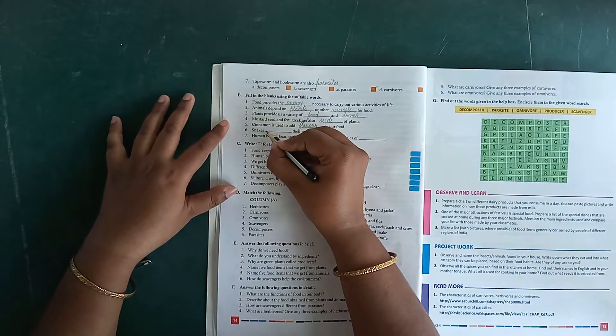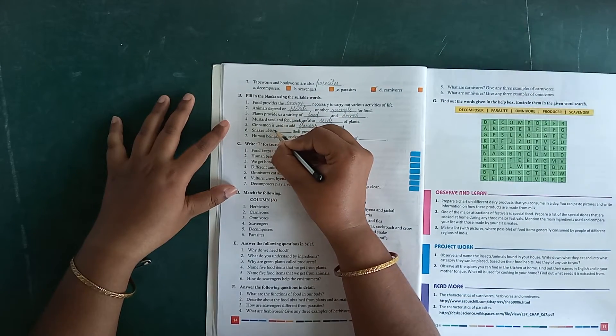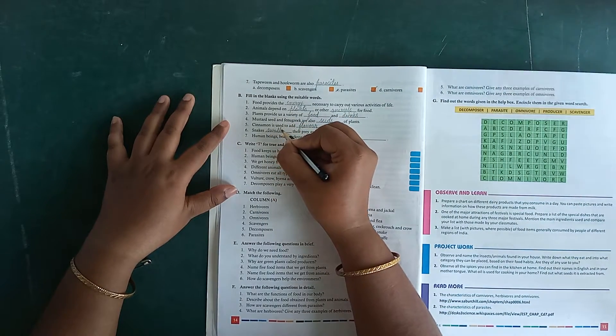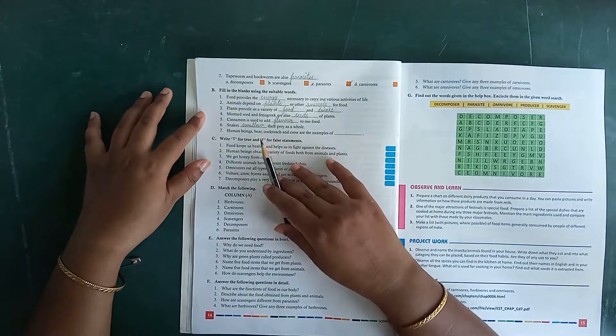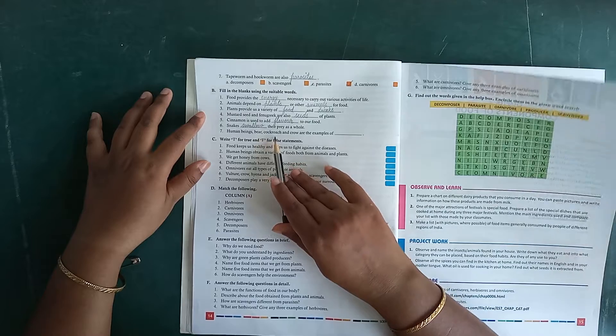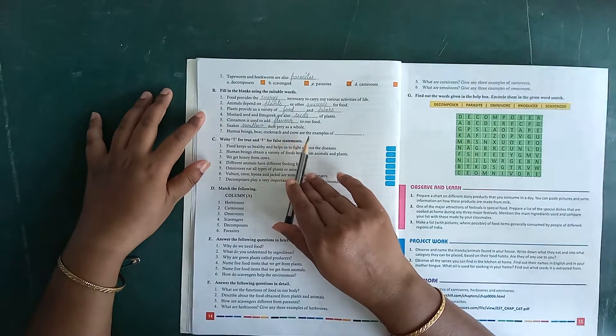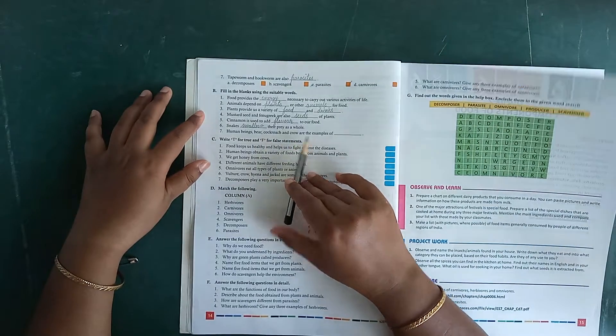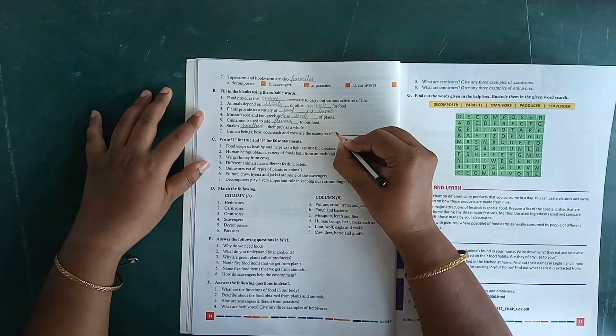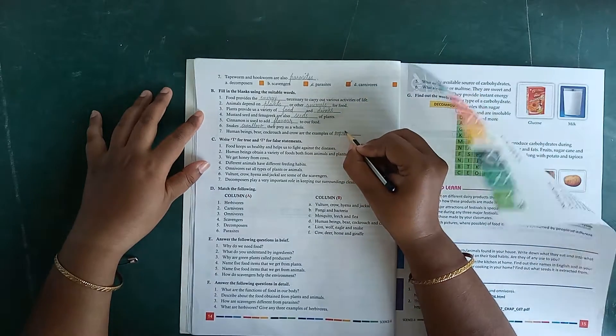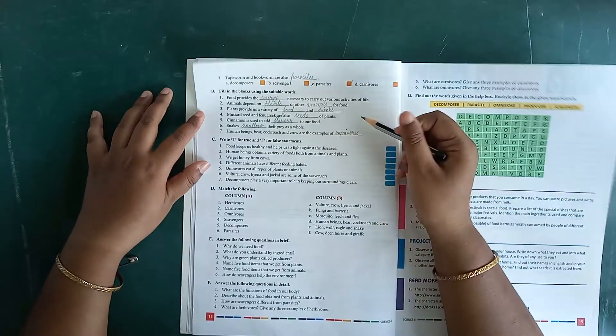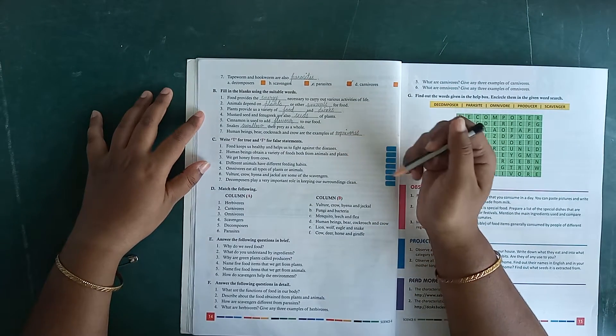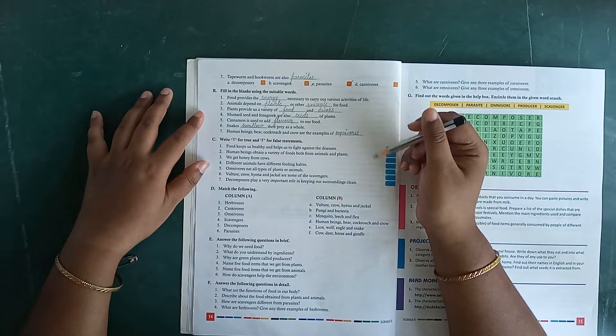Snakes dash their prey as a whole. Snakes swallow. Human beings, bear, cockroach and crow are examples of omnivores, O-M-N-I-V-O-R-E-S. These eat plants and animals, so they are examples of omnivores.